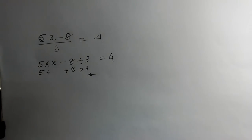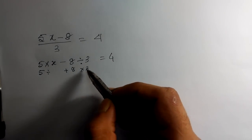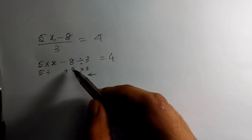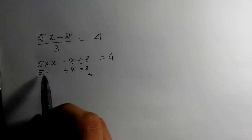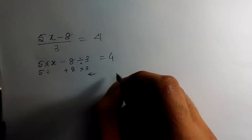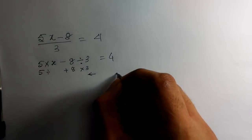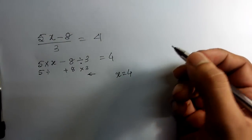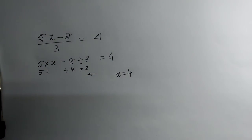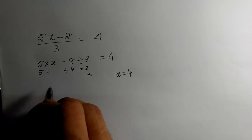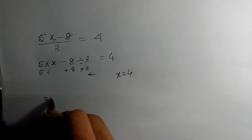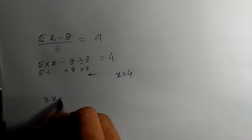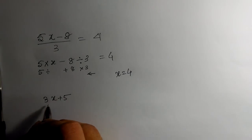We proceed from right-hand side to the left: 4 times 3 is 12, then plus 8 is 20, and then divided by 5 is 4. So the answer is x = 4.